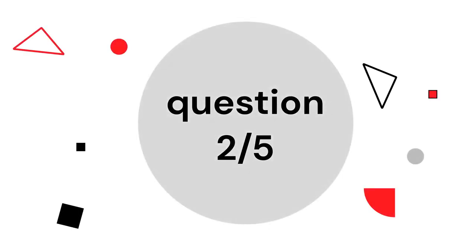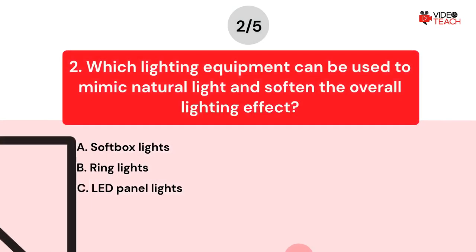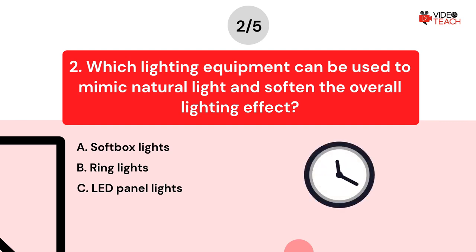Question number two. Which lighting equipment can be used to mimic natural light and soften the overall lighting effect? Option A: Softbox lights. Option B: Ring lights. Option C: LED panel lights. Now you have about 15 seconds to think about your answer.